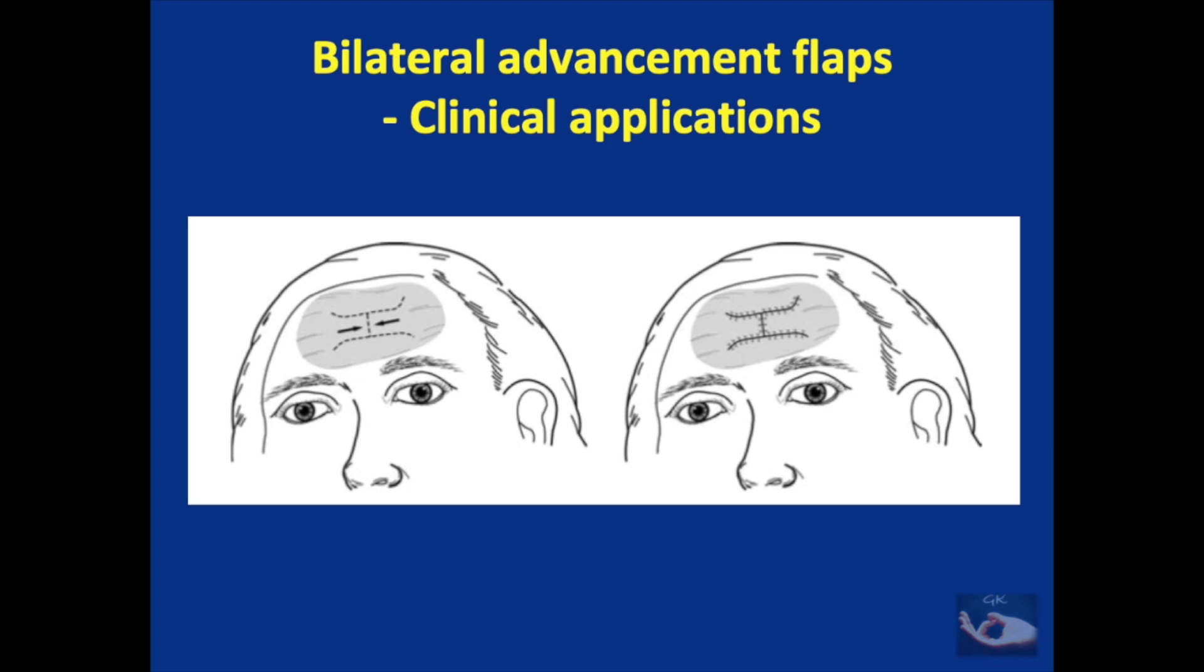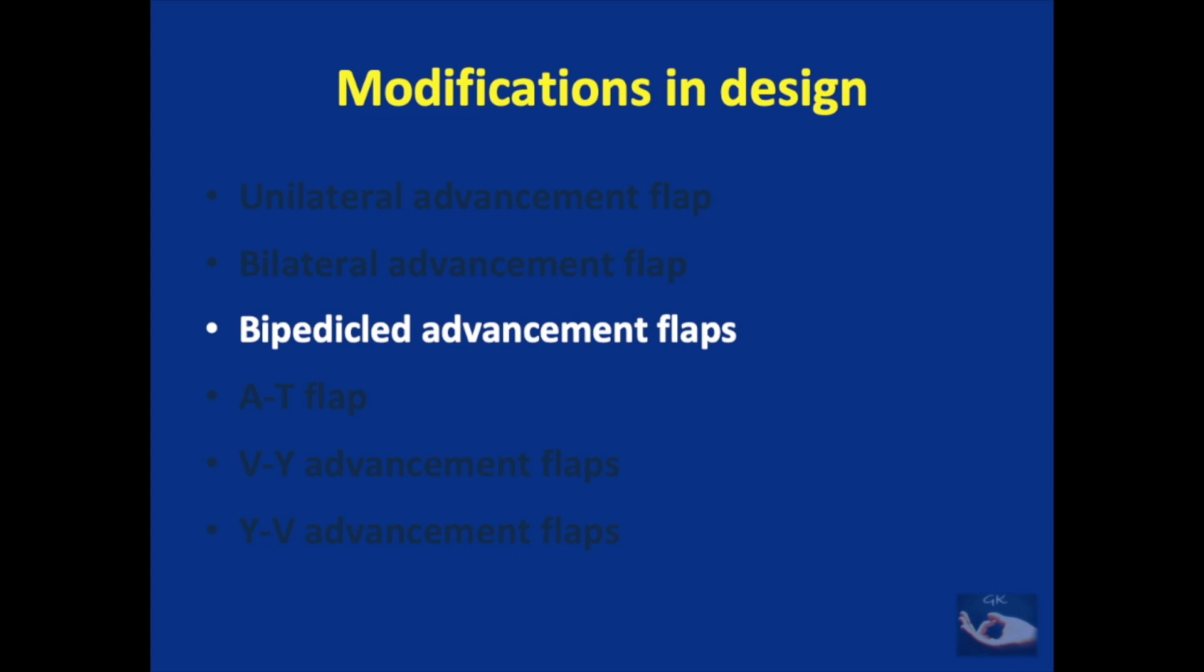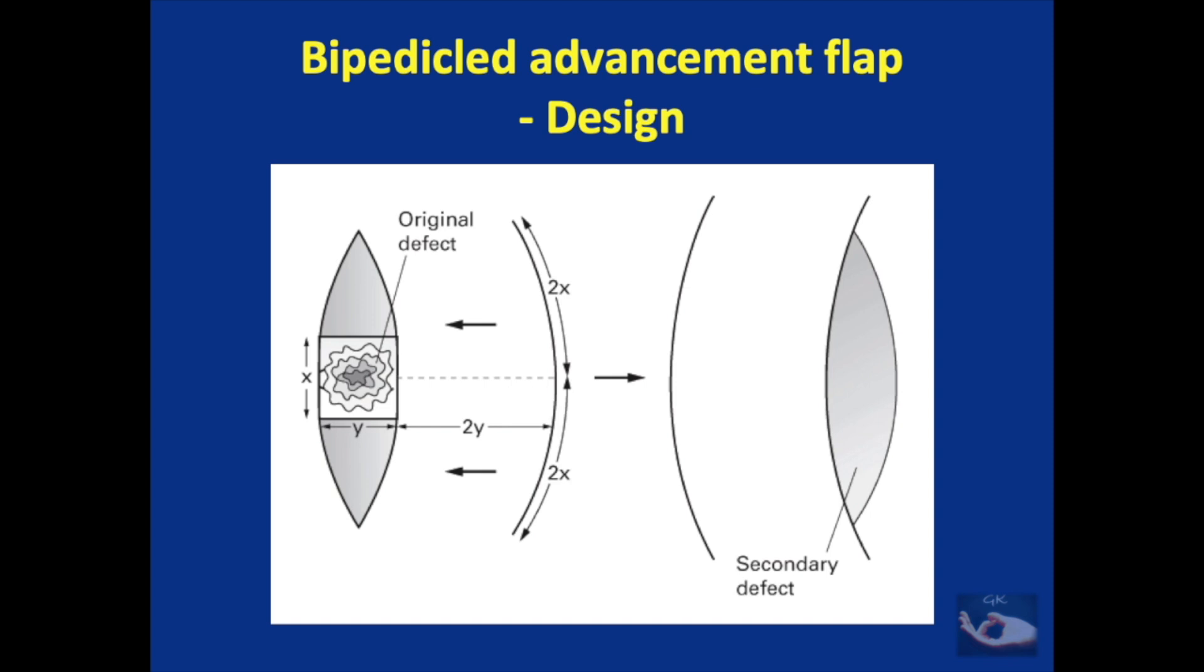Advancement flaps can also be designed in such a way that they are bipedicled. The defect is usually made elliptical. The bipedicled advancement flap is planned on one side of this elliptical defect. The width of the flap is twice the width of the defect, and the length of the flap is four times the length as shown in the diagram.